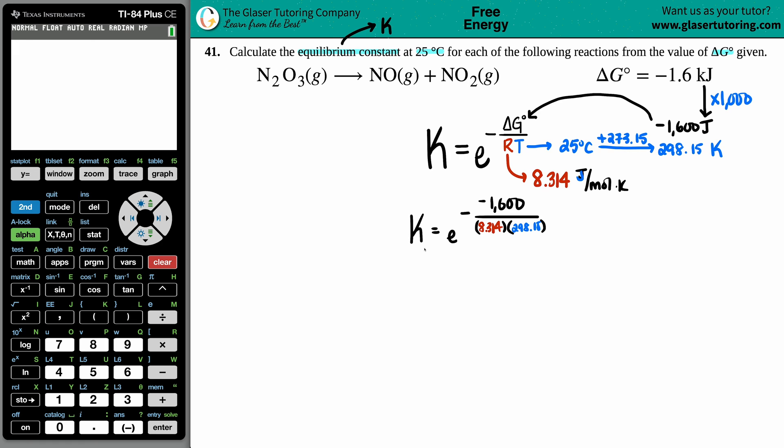So when I put it into the calculator, I'm not even going to worry about the negatives. The first thing you should do is simplify what this is. So I'm just going to go on the calculator and I'm going to say 1600 divided by 8.314, and now since the 298.15 is in the denominator and I'm not using any parentheses, I'm going to say divide again by 298.15.